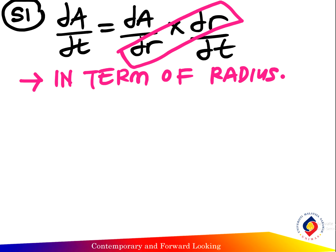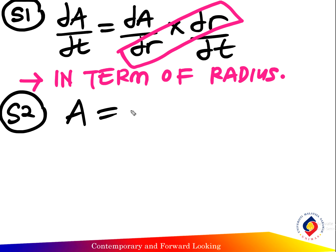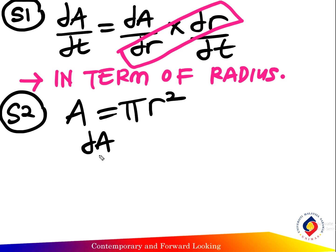Step 2: given the area of the circle, A equals pi r squared. Write down the area in terms of the radius, and dA over dr here equals 2 pi times the radius.